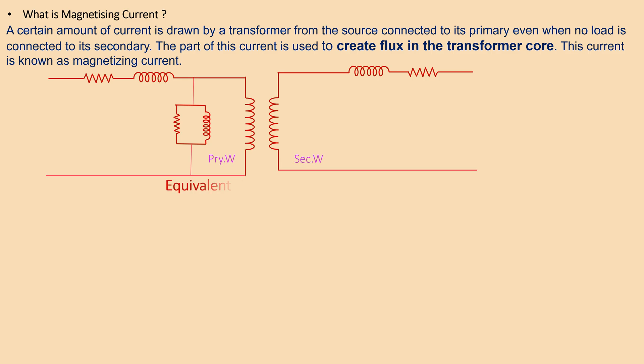Suppose the resistance and reactance of the primary winding are R1 and X1, and the resistance and reactance of the secondary winding are R2 and X2 respectively. When the voltage V1 AC is applied at the primary side at no load, EMF is induced in the primary and secondary windings due to alternating flux created by the small no-load current.